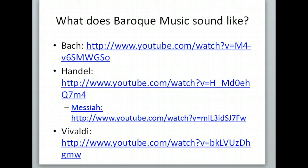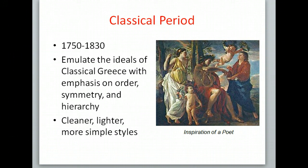On the other side of the chart on your notes is the Classical period. This comes after the Baroque period, 1750 to 1830. We are starting to emulate the ideas of Classical Greece with an emphasis on order, symmetry, and hierarchy, with cleaner, lighter, more simple styles. You can see the togas in this example, the Inspiration of a Poet, where they're wearing Greek clothing and there are cherubs common in Greek art.